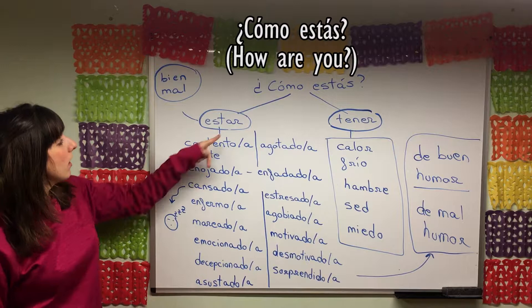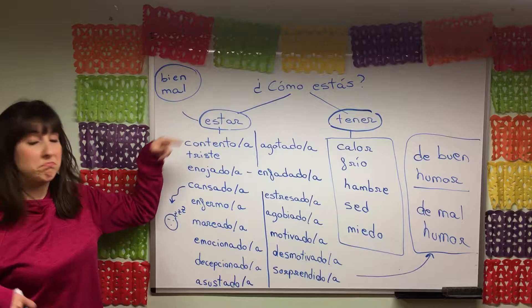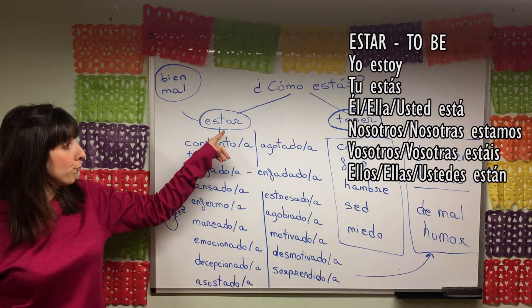¿Cómo estás? How are you? We could say things like I'm good — estoy bien, or I'm not good — estoy mal. I'll be putting the conjugation of both verbs on the board just so that you have them.